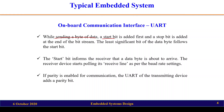After the start bit comes the least significant bit of the data stream. Considering 8-bit data, bit position 0 is the LSB, followed by positions 1 through 6, and position 7 is the MSB. After the MSB, a stop bit is added. So the frame structure is: start bit → LSB → data bits → MSB → stop bit.